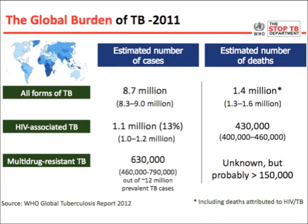TB-HIV co-infection causes also 430,000 deaths every year out of the 1.4 million total deaths. The prevalence of multidrug-resistant TB is more than 630,000 cases present on a daily basis in the world, and the vast majority of those are not detected and most likely lethal. So if you don't detect this multidrug-resistant form and don't treat it properly, the risk of dying is extremely high.